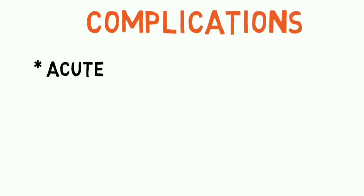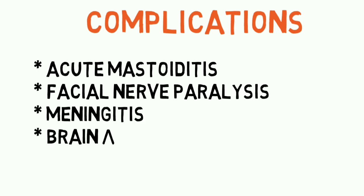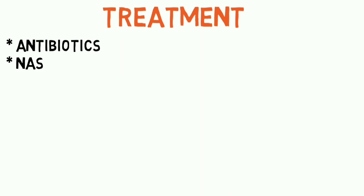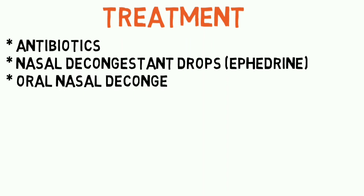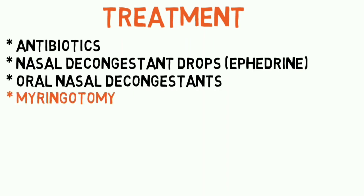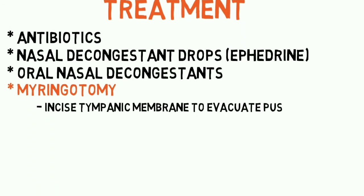What are the complications of ASOM? Acute mastoiditis, facial nerve paralysis, meningitis, and brain abscess. Treatment involves giving appropriate antibiotics, nasal decongestant drops to relieve the Eustachian tube obstruction, and oral nasal decongestants. In some cases, myringotomy — the incision of the tympanic membrane and drainage of the pus — is performed in severe cases.